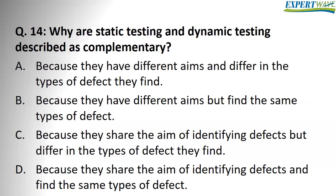Question number 14: Why are static testing and dynamic testing described as complementary? The question is asking why static testing and dynamic testing should be done together because they complement each other. Answer A: because they have different aims and differ in the types of defects they find. Of course, static testing finds different types of defects than dynamic testing, but do they have different aims? Not really — they both aim at finding defects.